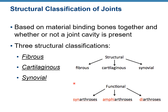We can also classify joints not based on their mobility, but based on the material that holds bones together — that's structural classification. The one we just discussed was functional classification. Structural classification gives us three types: fibrous joint, cartilaginous, or synovial. Here on your right you can see the structural and functional classification of joints.